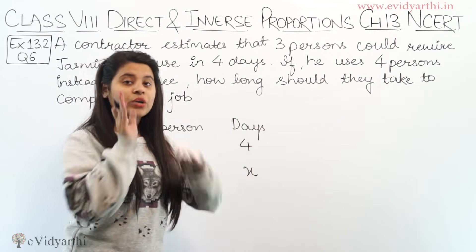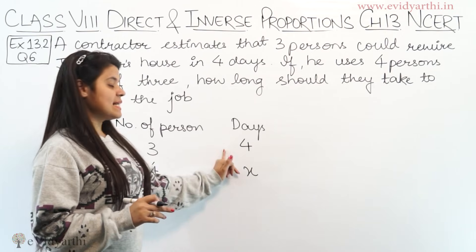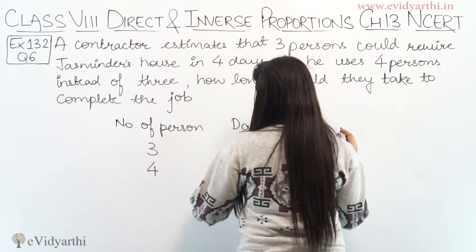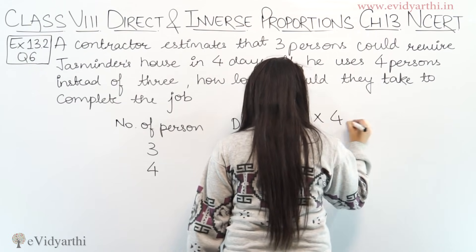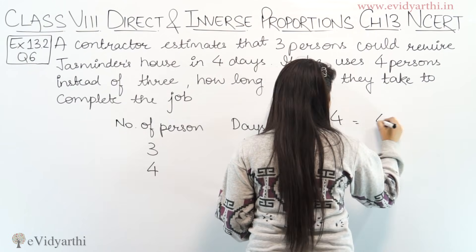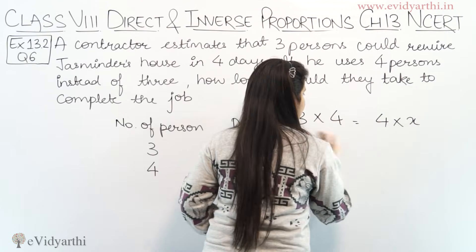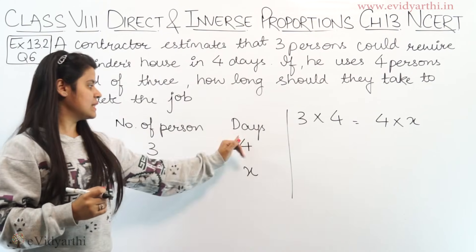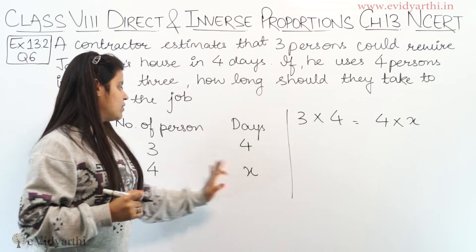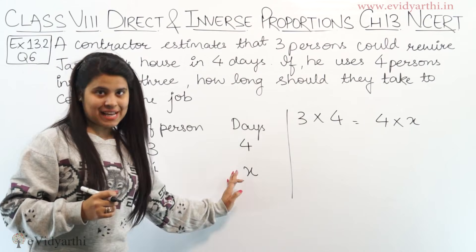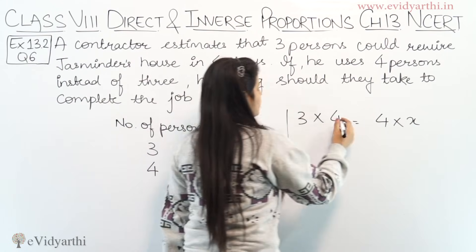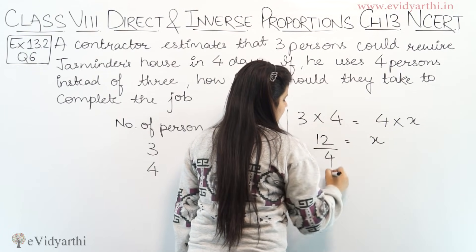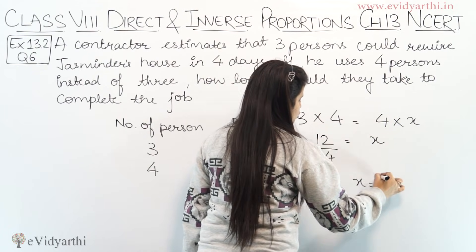This is the case of inverse proportion. So, we form the equation as: 3 into 4 equals 4 into x. Here, number of persons is multiplied with number of days on each side. This gives us 12 equals 4x. Dividing, x equals 3.